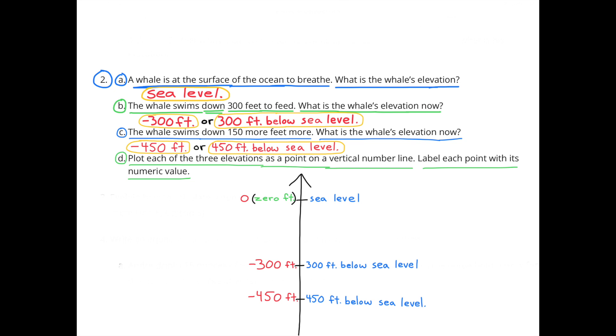D. Plot each of the three elevations as a point on a vertical number line. Label each point with its numeric value. The whale started at 0, which would be sea level. He went down 300 feet, which would have brought him to 300 feet below sea level or negative 300 feet. Then the whale went down an additional 150 feet, making a total of 450 feet below sea level or negative 450 feet.